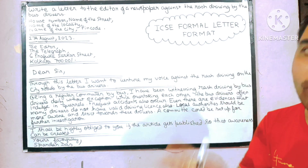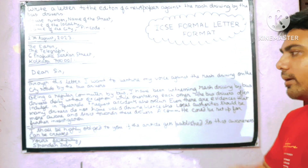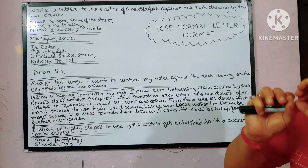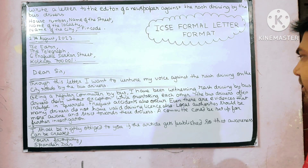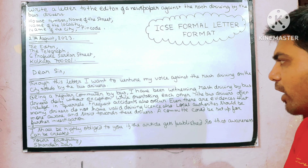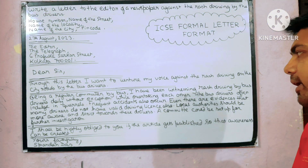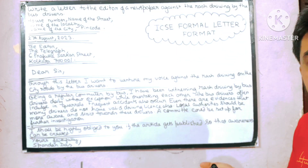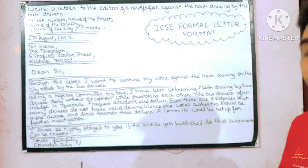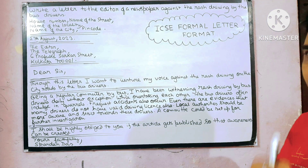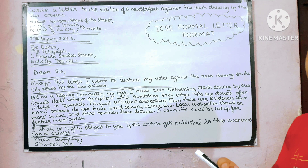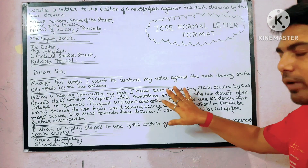We have to provide two to three problems and two solutions. Those solutions may or may not be granted — that's up to them, but we have to give them. For example: 'Being a regular commuter by bus, I have been witnessing rash driving by bus drivers daily without exception. While overtaking each other, bus drivers often indulge in quarrels.' That's two problems. Third problem: frequent accidents also occur. Additionally, many drivers do not have a valid driving license. Solutions: local authorities should be more strict and aware towards these drivers, and a committee could be set up for further investigation. Then they will take the necessary steps. Leave a line after the body part.